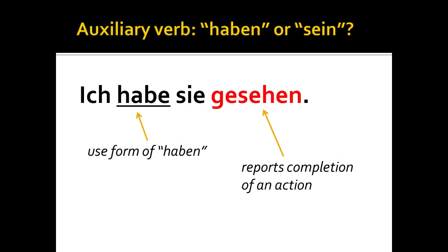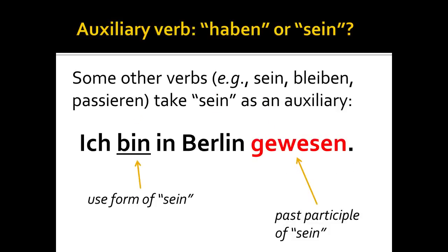There are a few instances where it may be less clear that you have to use sein. Some verbs, like sein itself, bleiben (to remain), or passieren (it happens or occurs), automatically take sein as an auxiliary. For instance, ich bin in Berlin gewesen — I have been in Berlin. There's no motion and no change of condition, but gewesen is the past participle of sein, so I have to use some form of sein as the auxiliary. So the safe rule of thumb is: motion or change of condition — use sein; special verbs like sein and bleiben also take sein. Everything else, use haben. That's the lecture on present perfect tense in German using strong verbs.